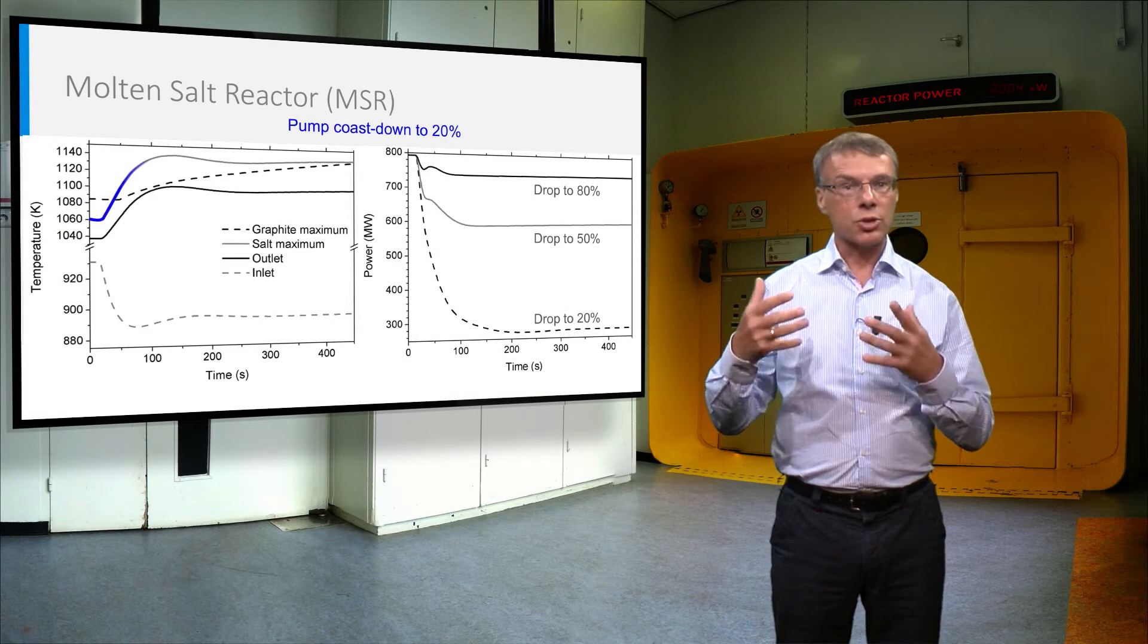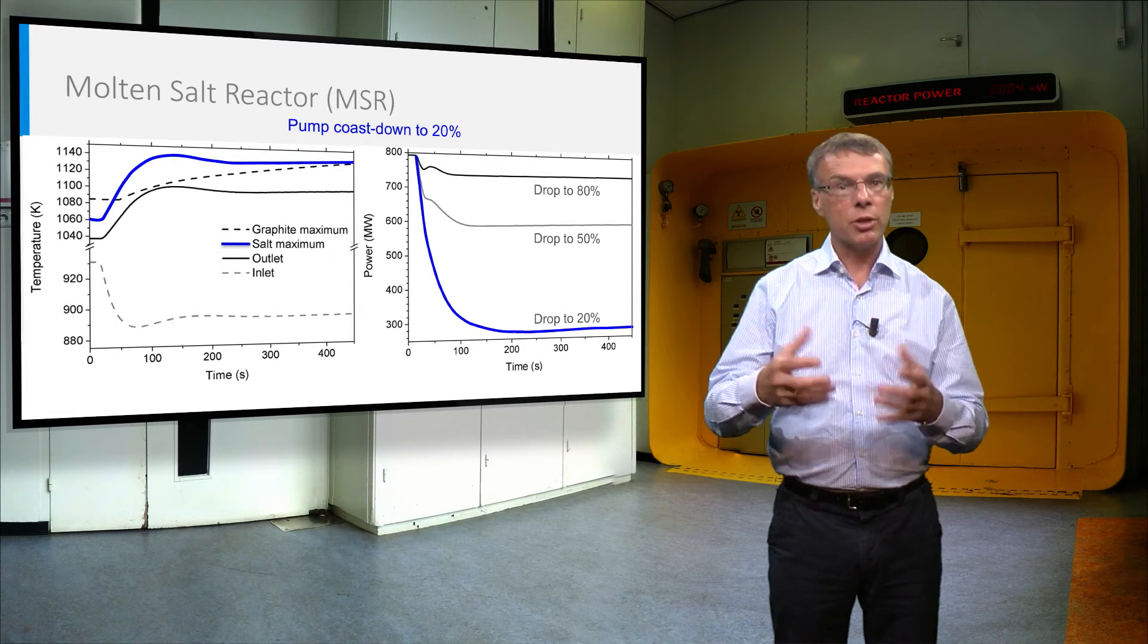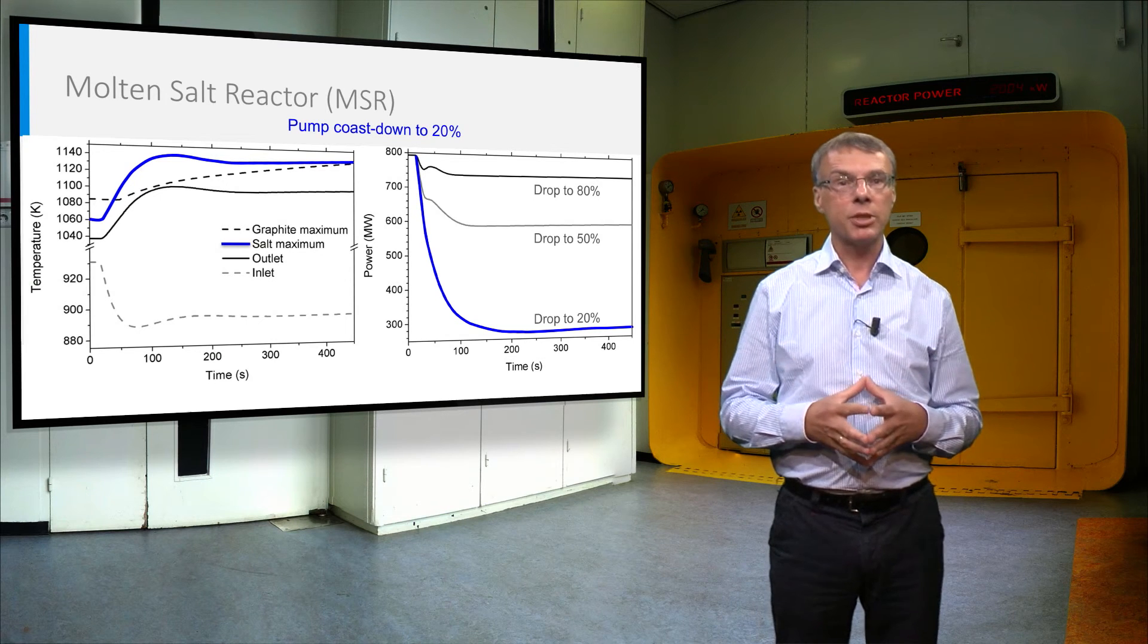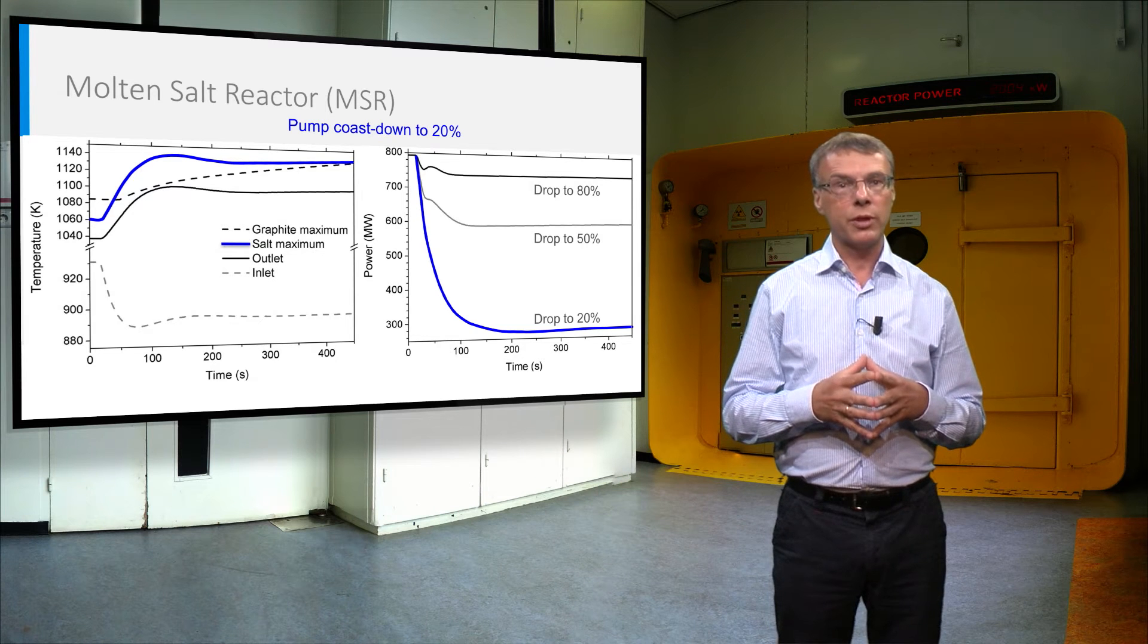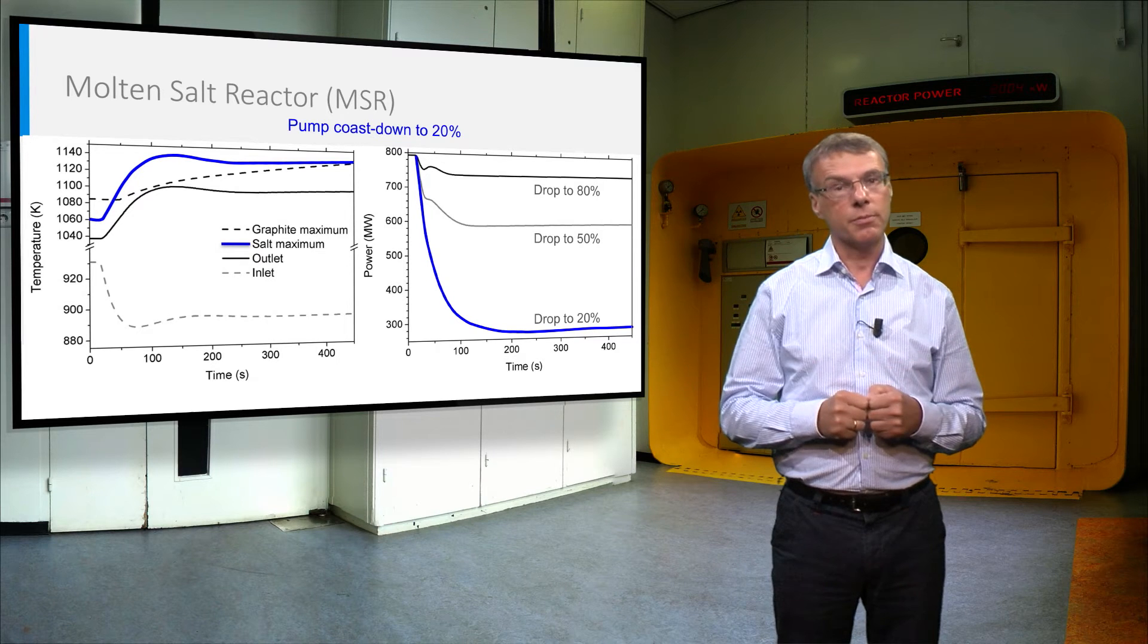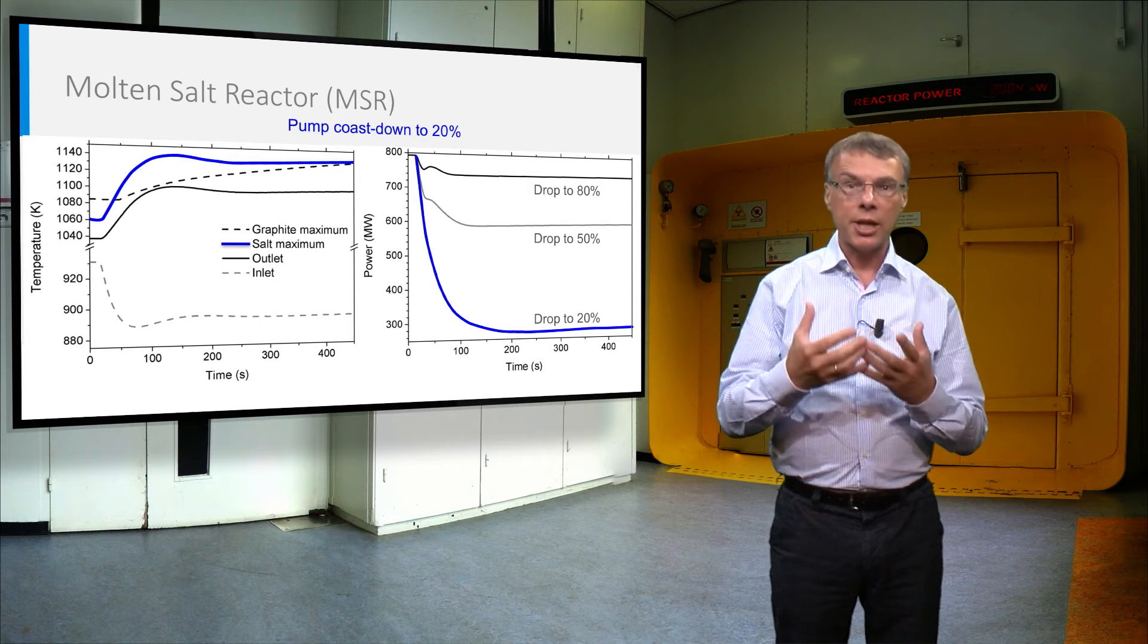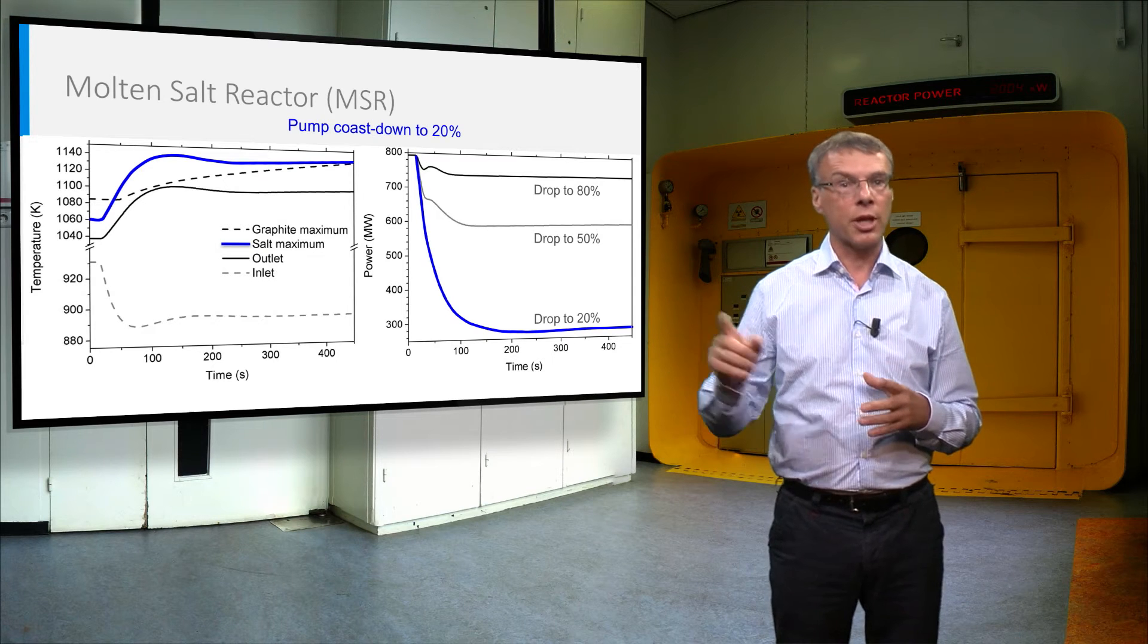The MSR has a strong negative power feedback coefficient, because of the nucleo-Doppler effect and the expansion of the salt upon heating. Due to these mechanisms, the power drops sharply if one or more pumps would fail. The left figure shows the temperature of the salt if 4 out of 5 pumps would fail. The temperature rises only some few tenths of degrees, which directly leads to a sharp decrease of the reactor power, shown in the right figure.